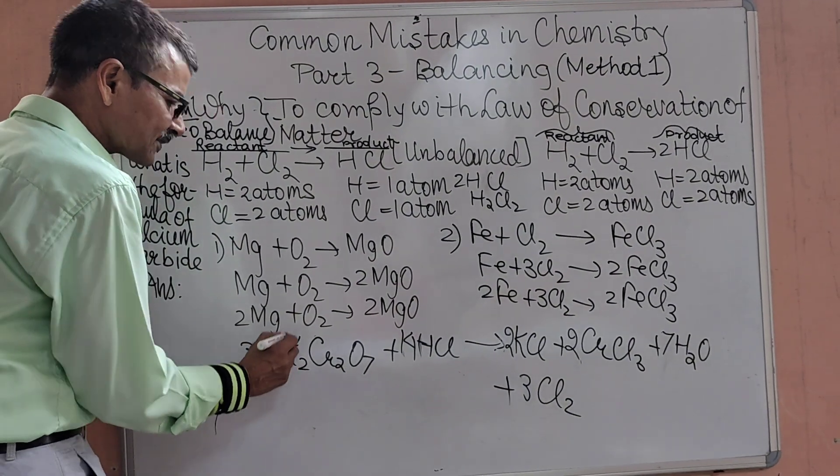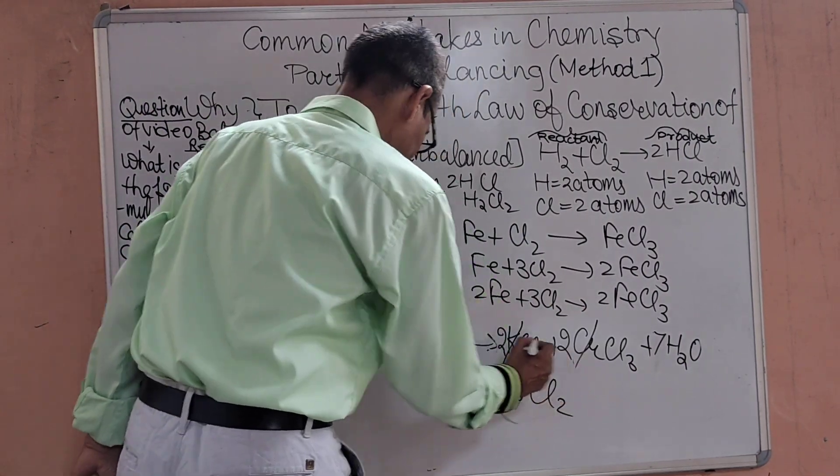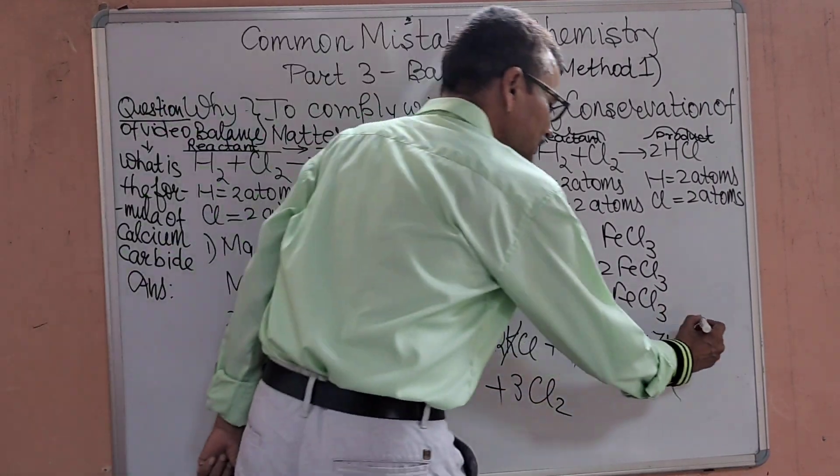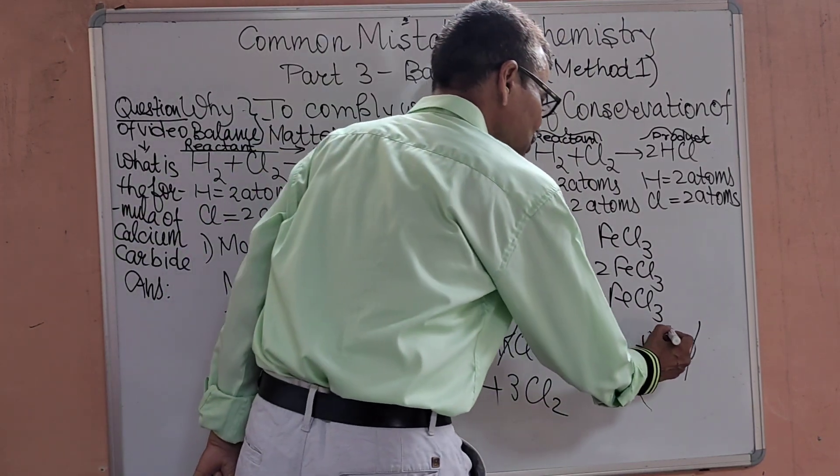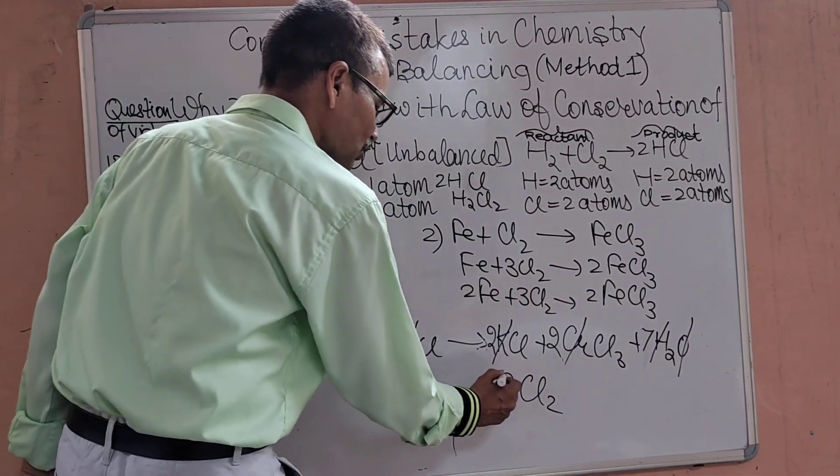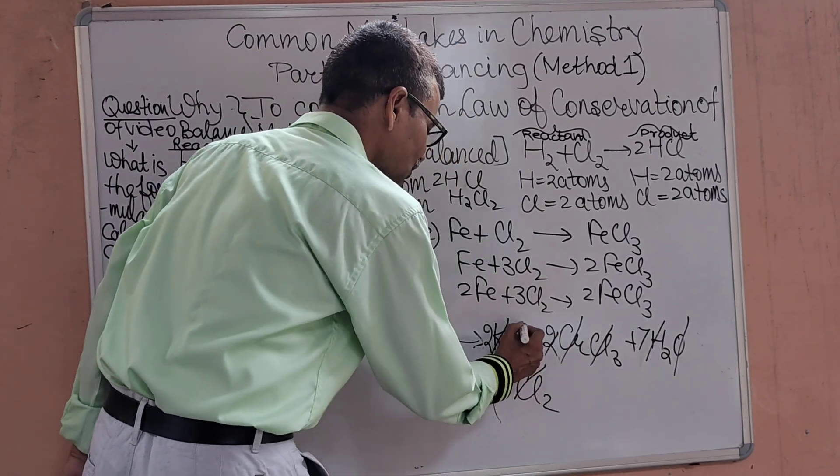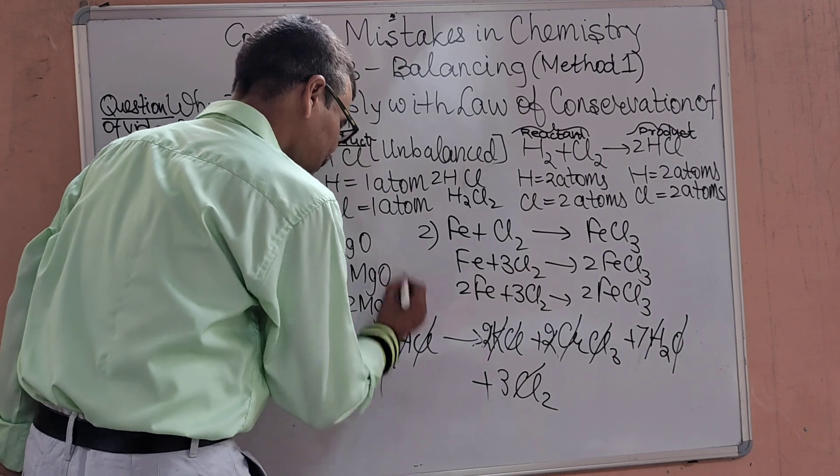We can check: 2 potassium, 2 potassium. 2 chromium, 2 chromium. 7 oxygen, 7 oxygen. 7×2=14 hydrogen, 14 hydrogen. And 14 Chlorine: Cl 2, 6+6+2=14, and 14 Chlorine.